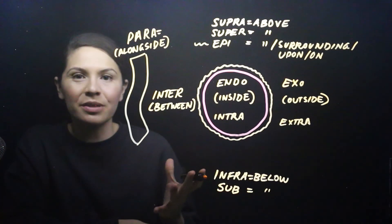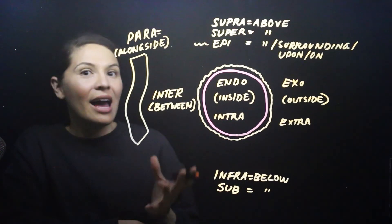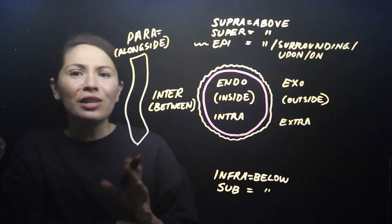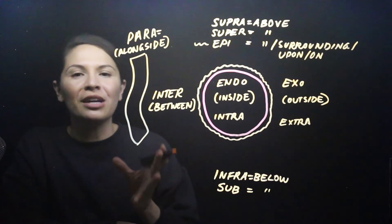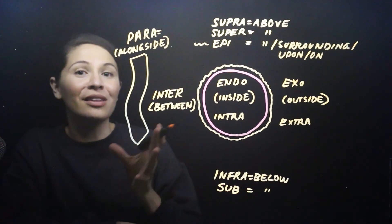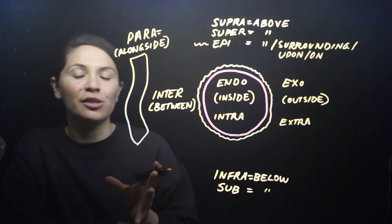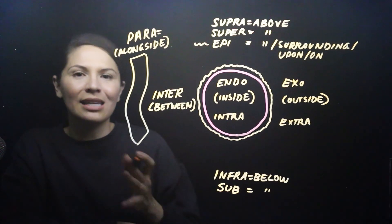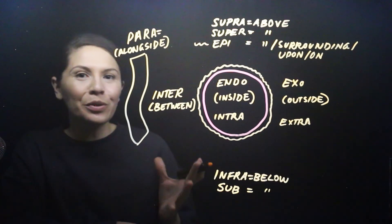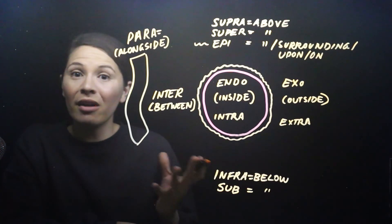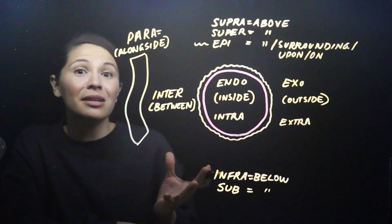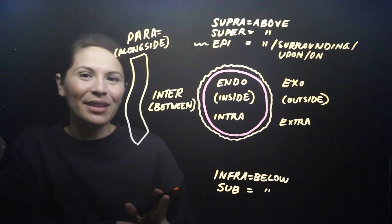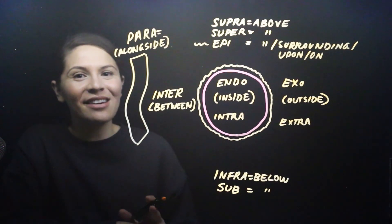So that's anatomical position, directional terms, and an introduction to anatomical prefixes — essential information when starting your journey with anatomy and physiology. Being able to break down the names of certain structures can tell you a lot: where it is, what it is, and sometimes what it does. I hope you've learned something today. Thanks for joining me, see you next time.